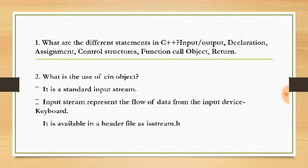What is the use of cin object? cin is a standard input stream. It represents the flow of data from input devices like keyboard, mouse, or input data. It is available in a header file called iostream.h.